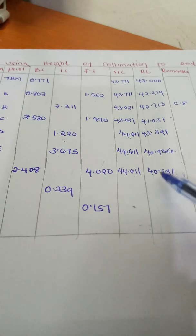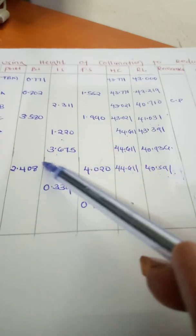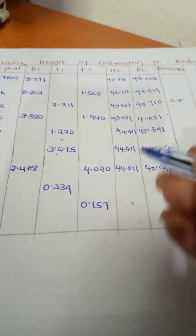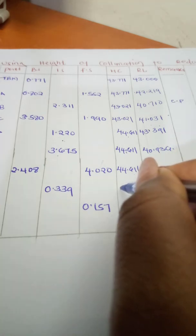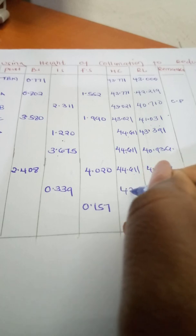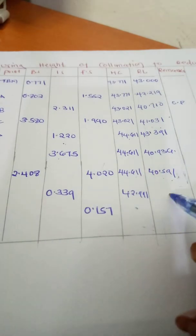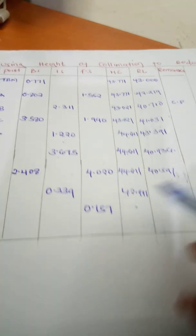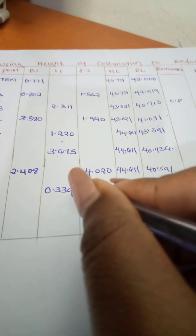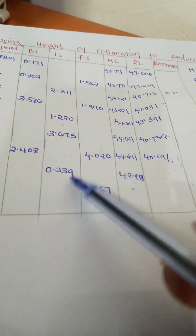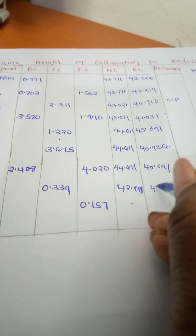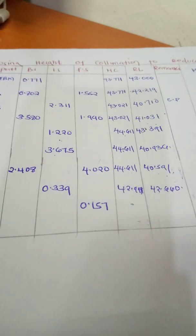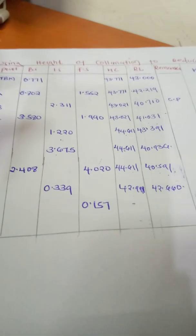To find the new height of collimation, we take the reduced level plus the backsight, which gives us 42.991. The reduced level at point G is then 42.991 minus 0.399, which gives us 42.660.